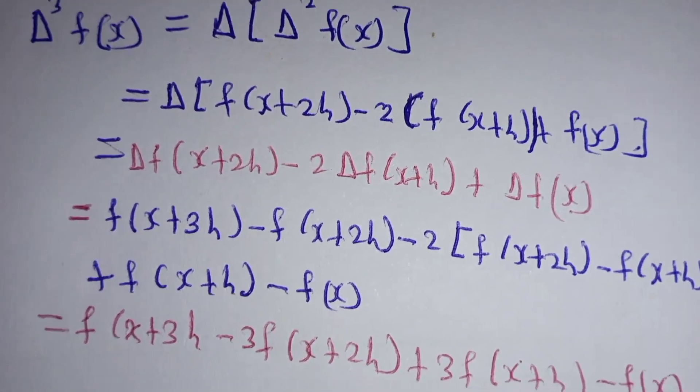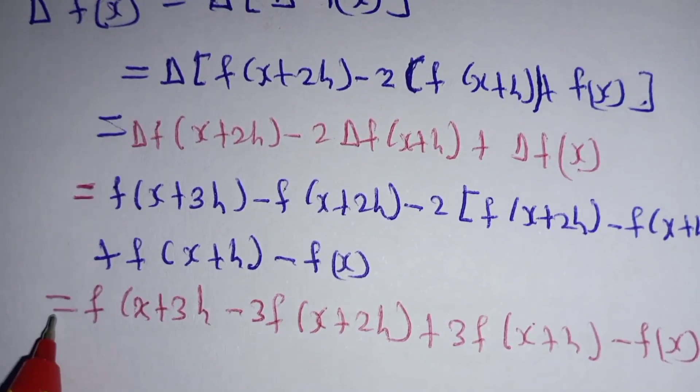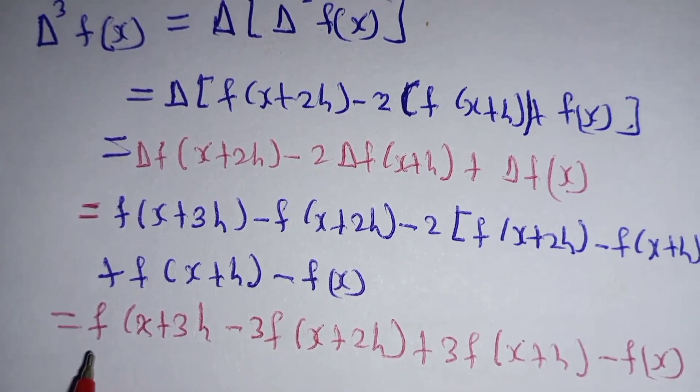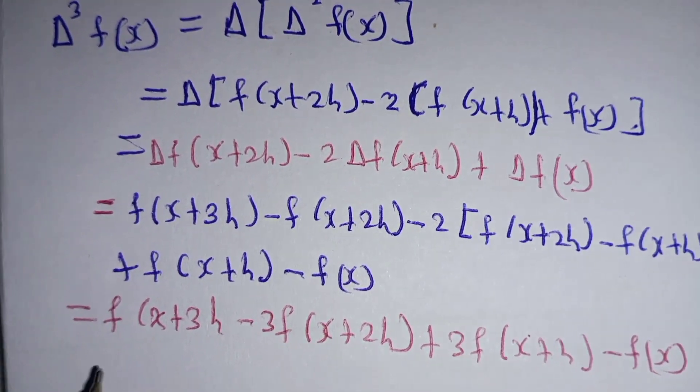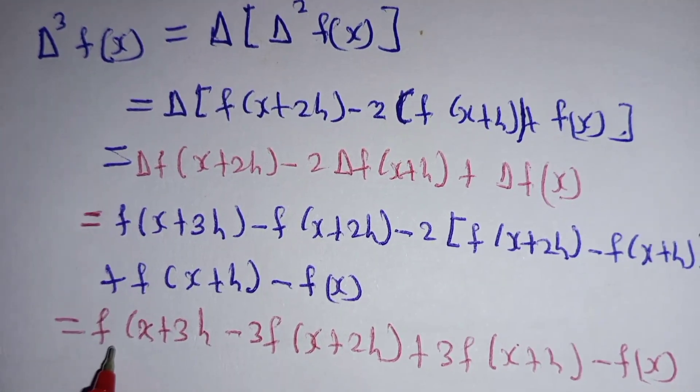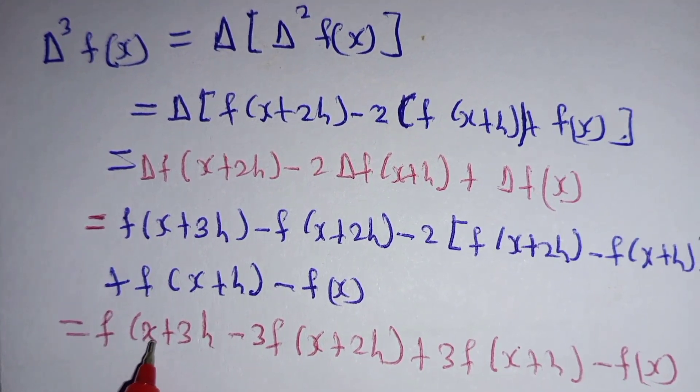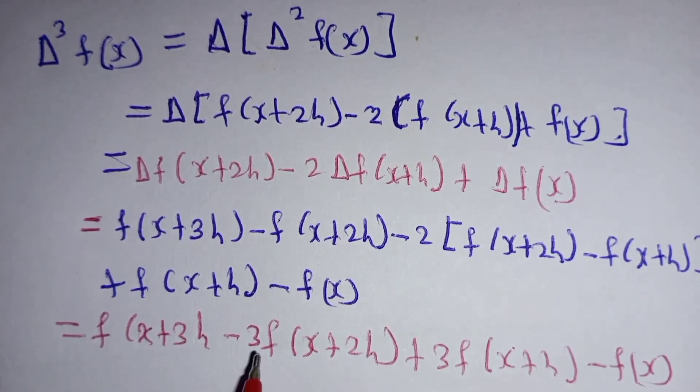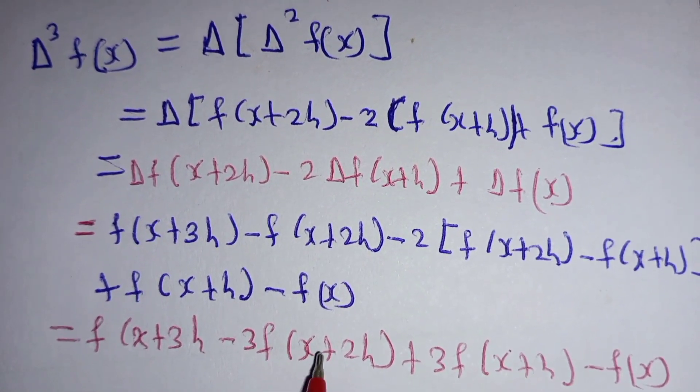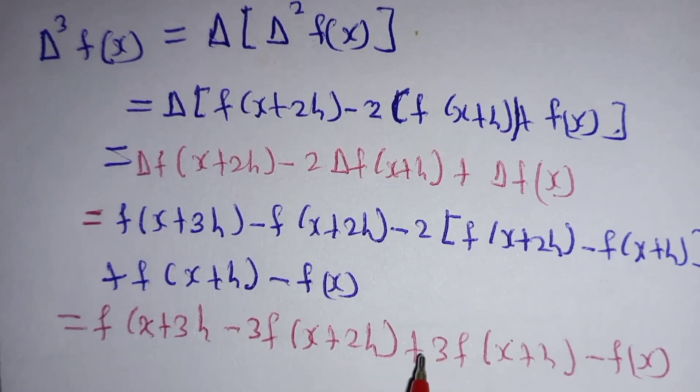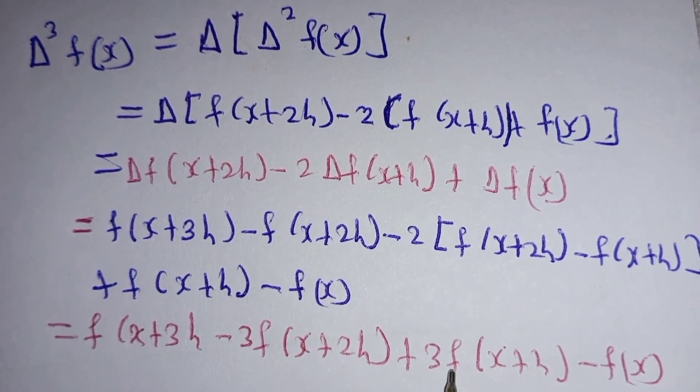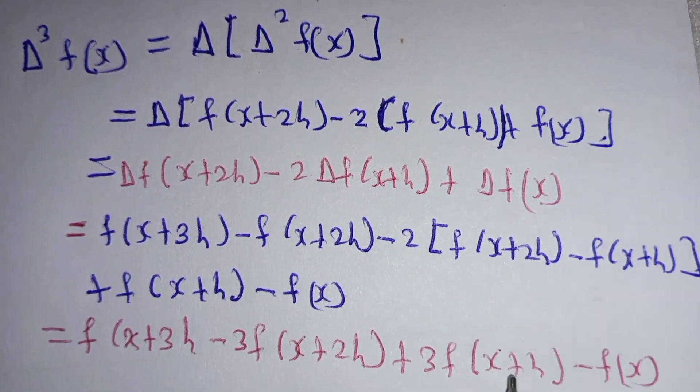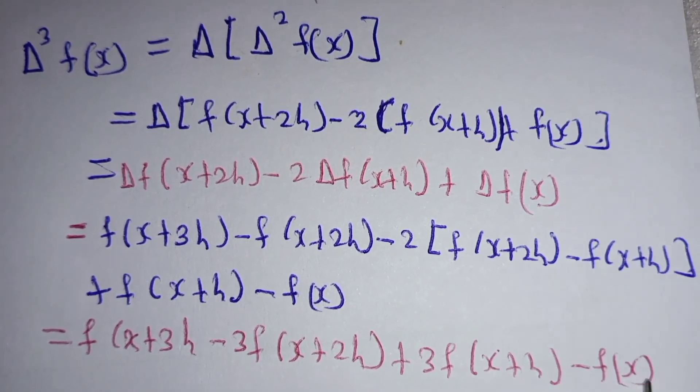Generally, this is how we write the third forward difference of function f(x). It is written as f(x+3h) - 3f(x+2h) + 3f(x+h) - f(x).